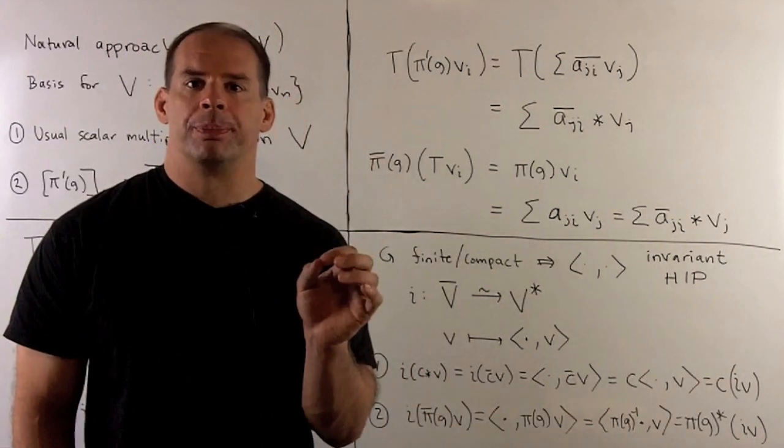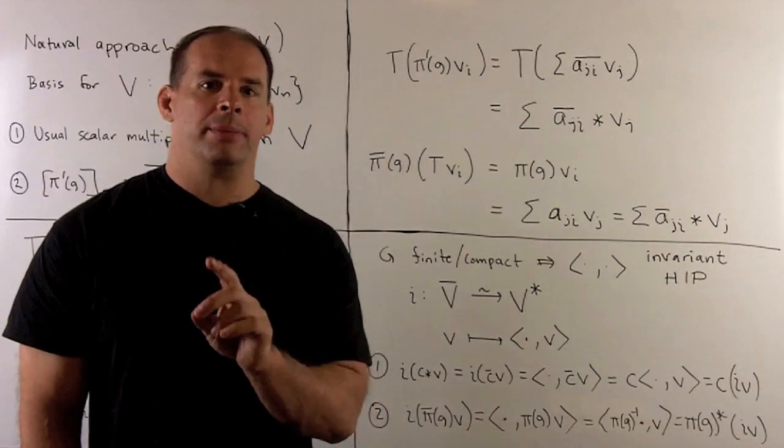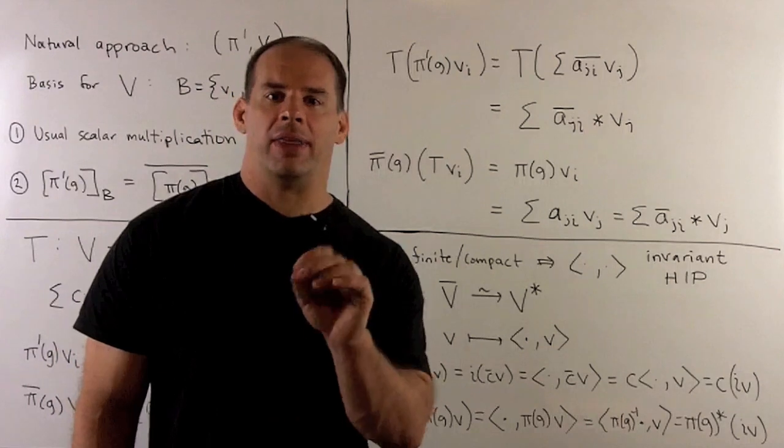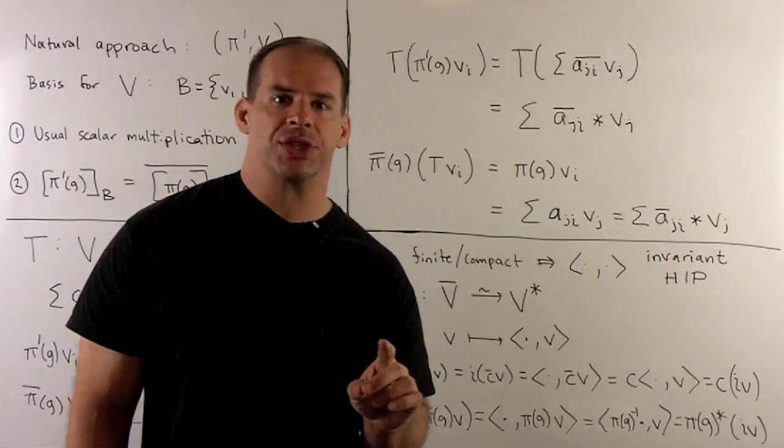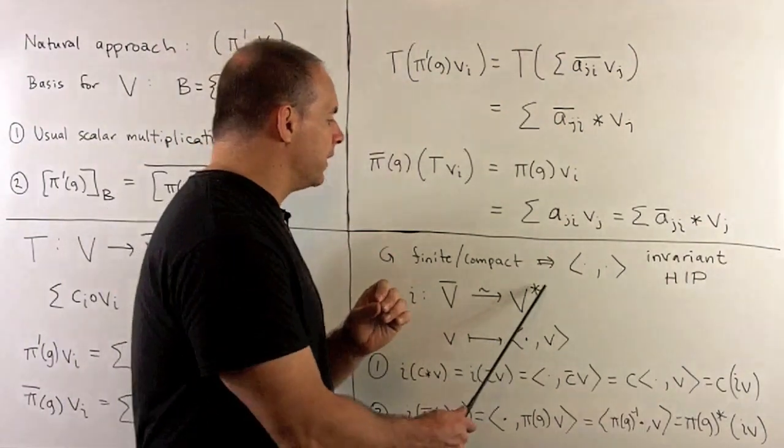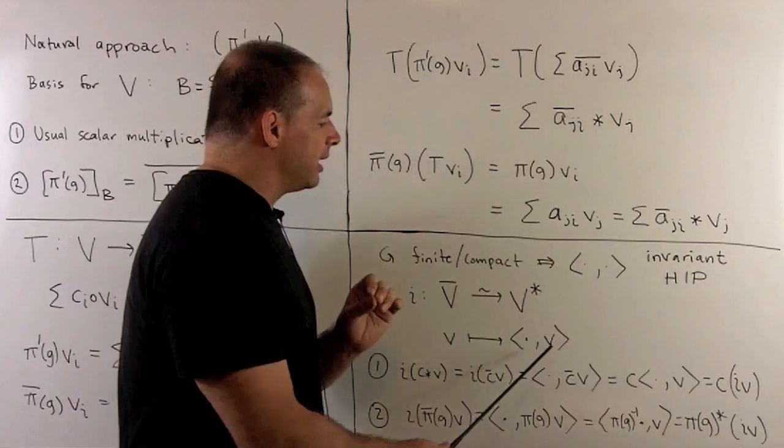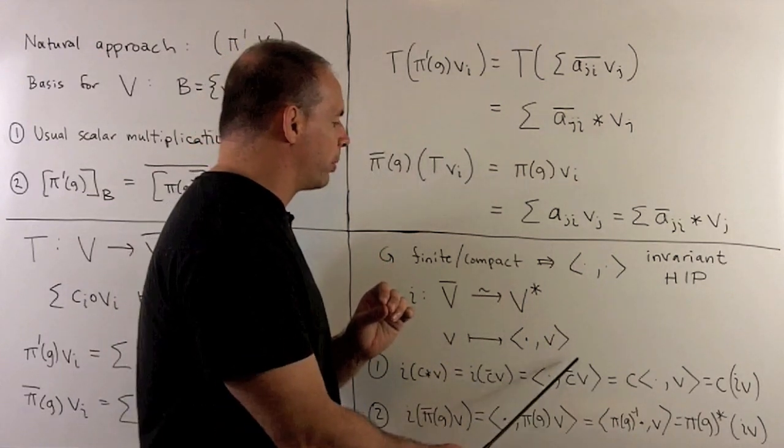For equivalence, we have to set up a linear map that is an isomorphism, and that intertwines our group actions. I'm going to have I carries V bar into the dual of V. It's defined by carrying the vector V into the second slot of our Hermitian inner product.